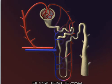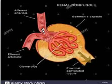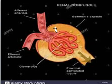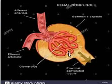The renal corpuscle is composed of two parts. First, the glomerulus — a tuft of blood capillaries with afferent and efferent arterioles. Second, Bowman's capsule. Bowman's capsule has two parts: the outer layer is squamous epithelium, and the visceral layer — which contacts the glomerulus — consists of podocyte cells.